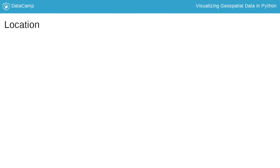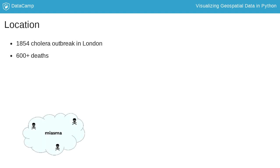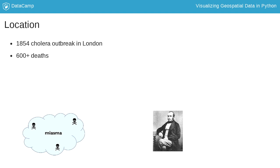Location is an important element in understanding how things are related. To illustrate this point, let's go back in time to 1854 when more than 600 people in London died of cholera. At the time it was thought that miasma or bad air caused the illness. A local physician named John Snow was skeptical of the prevailing theory and began collecting data about the people who had perished.